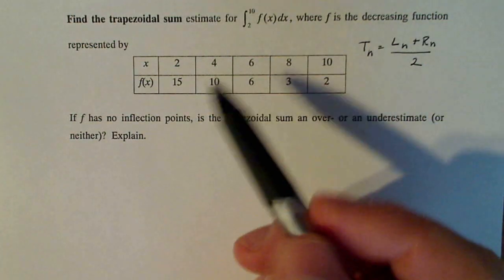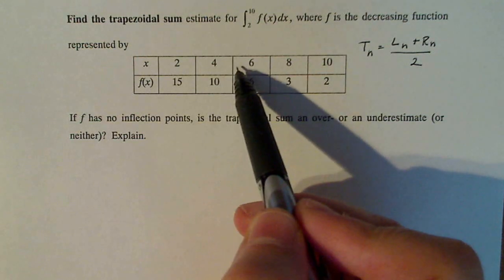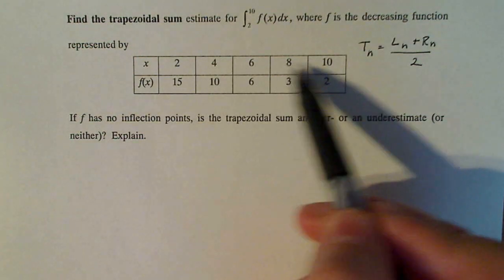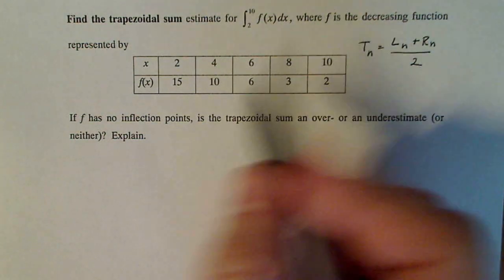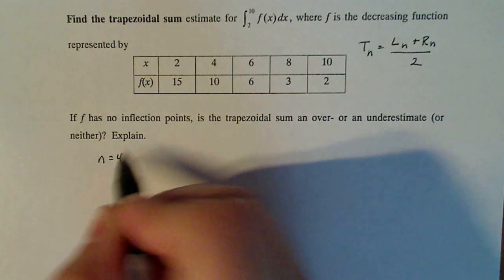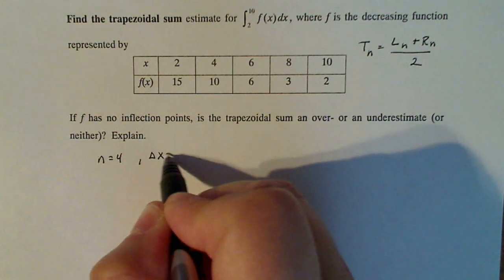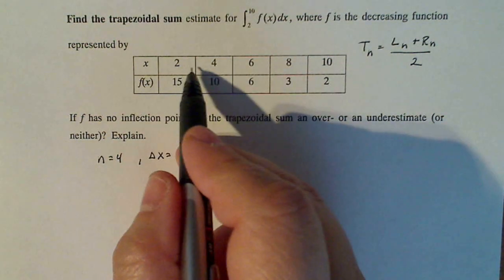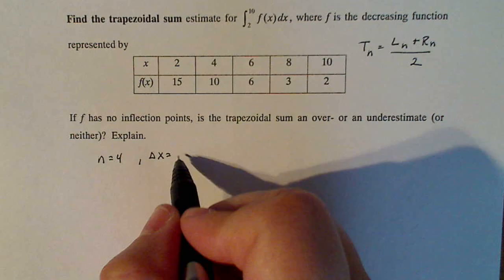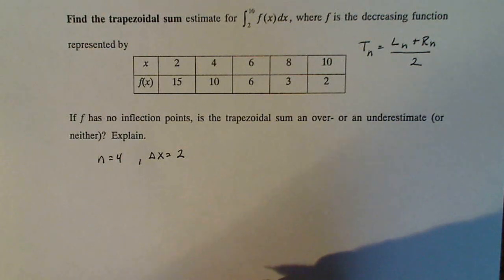What is n in our problem — the number of intervals? One interval, two intervals, three intervals, four intervals. So n is four, and delta x — how long are each of those intervals? Two units. So n is four, delta x equals two.